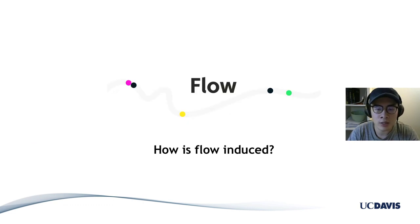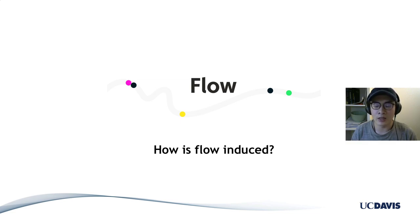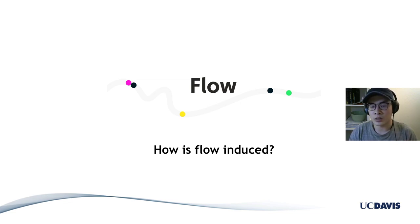The second question to ask is: how is flow induced? Flow theory basically suggests that flow is induced by the balance between difficulty and ability. If there is no balance — like if difficulty is high — then people would enter the state of anxiety. If the people's ability is high, then people are going to enter the state of boredom, as predicted by the theory.